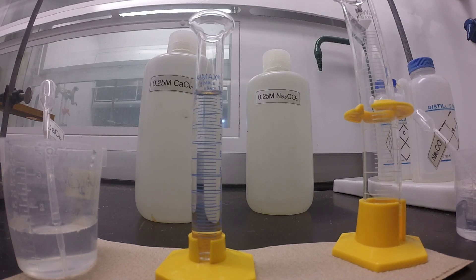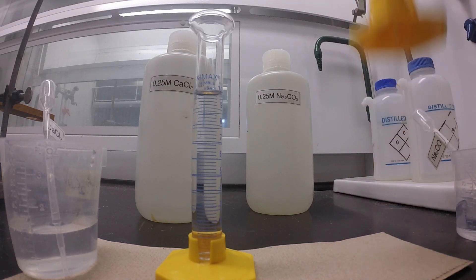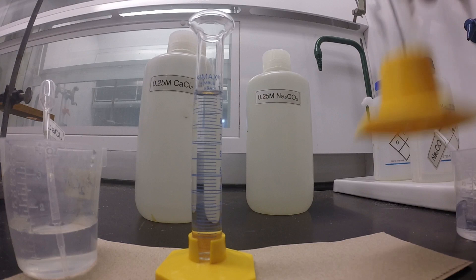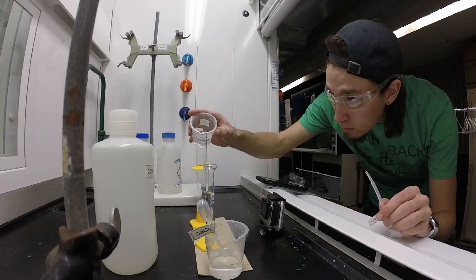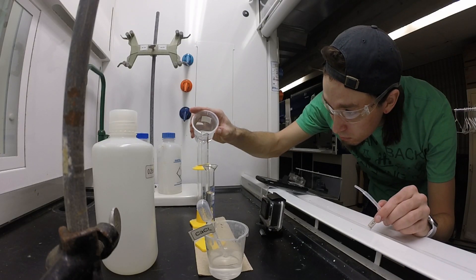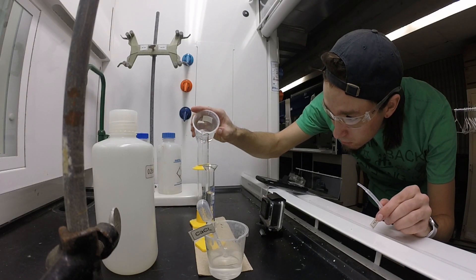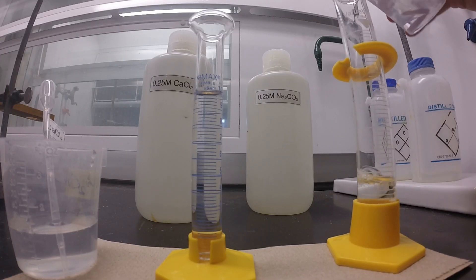We're now going to do the same thing with the sodium carbonate, except we are going to measure 15 mL of the sodium carbonate. Again, we'll do this very similarly - we're going to measure up to about 14 mL by pouring in with the beaker and then using the dropper to measure the last mL.